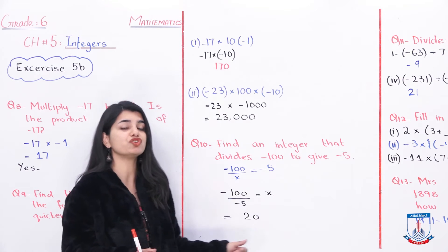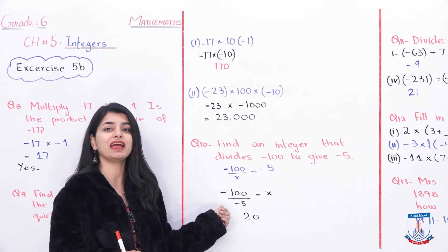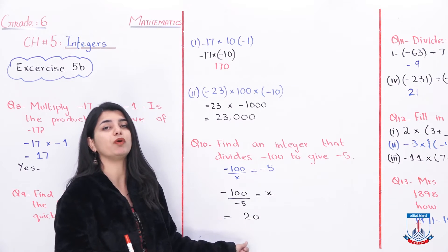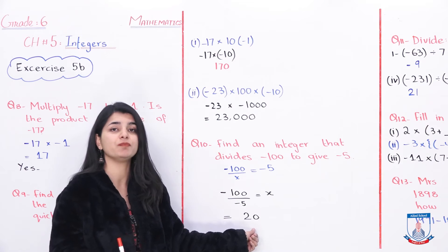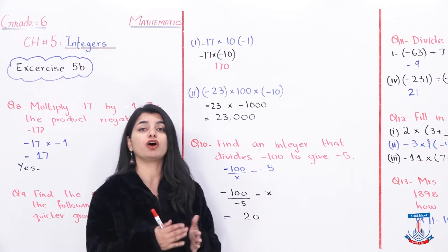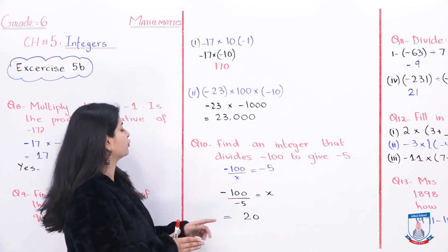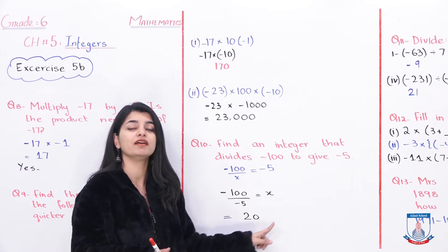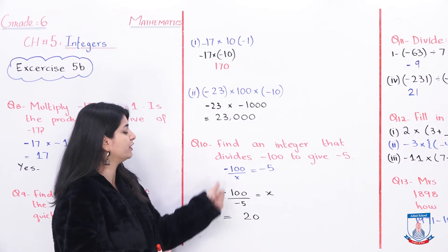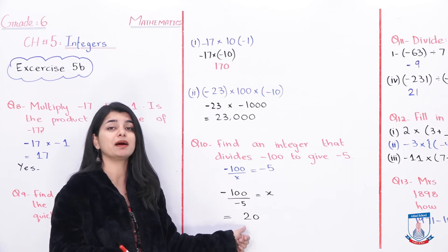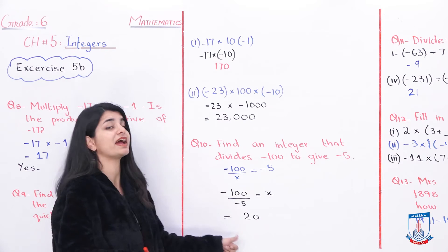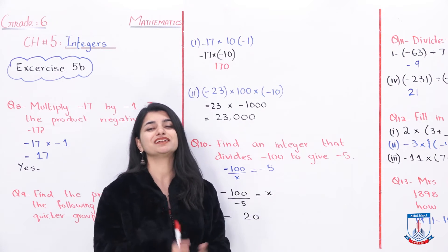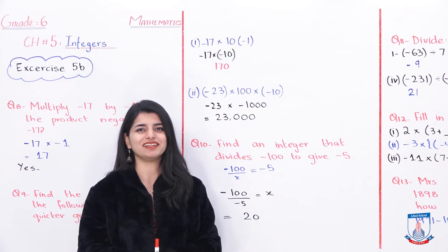In this way you solve this question: you divided, you looked at the signs — since the signs are the same, the answer becomes positive. The answer is 20. If you want to cross-check: 100 divided by 20 is 5. And since minus 100 divided by positive 20 gives different signs, the answer is minus 5. Correct!